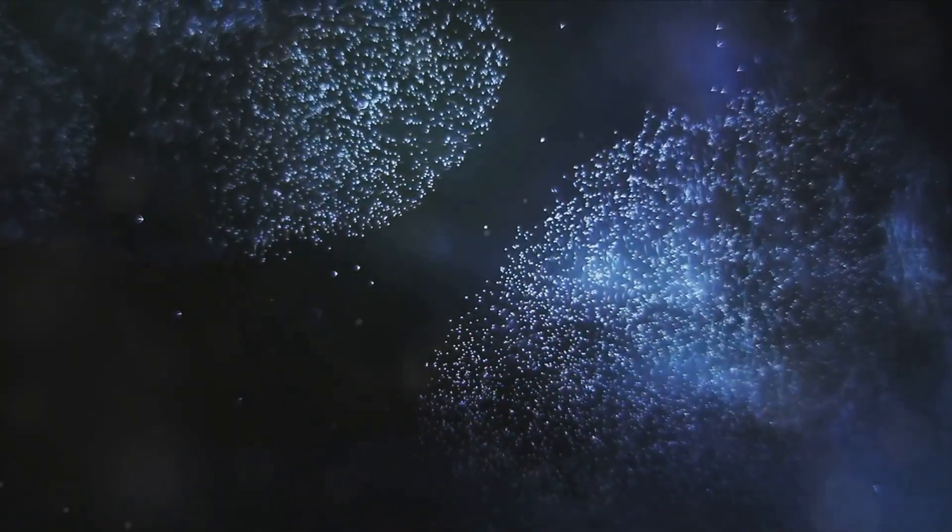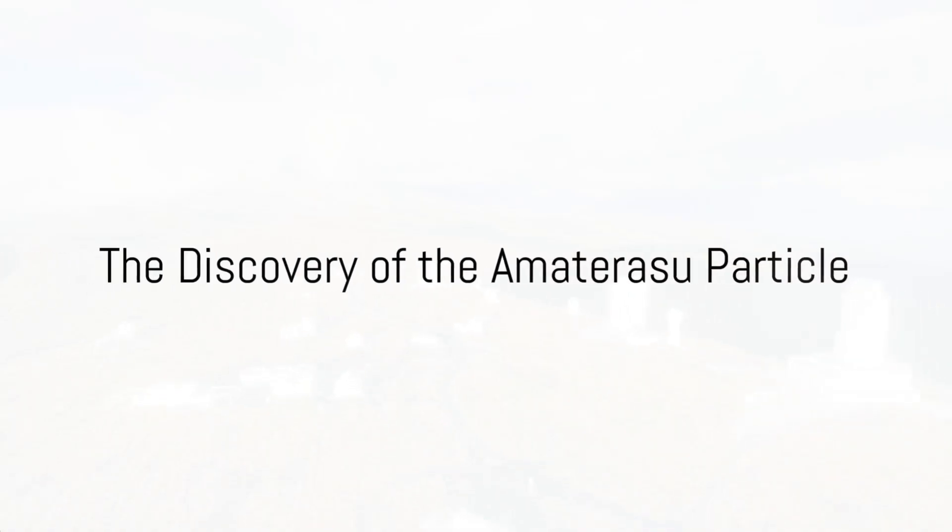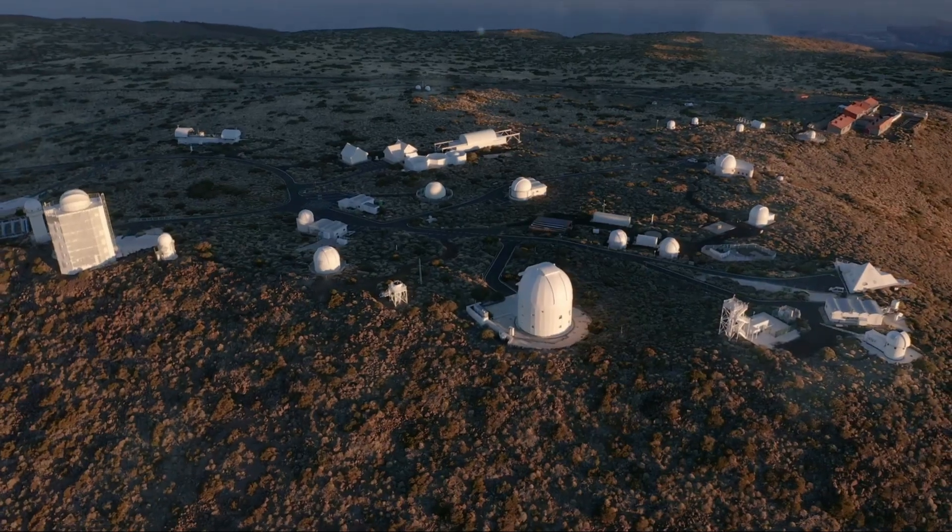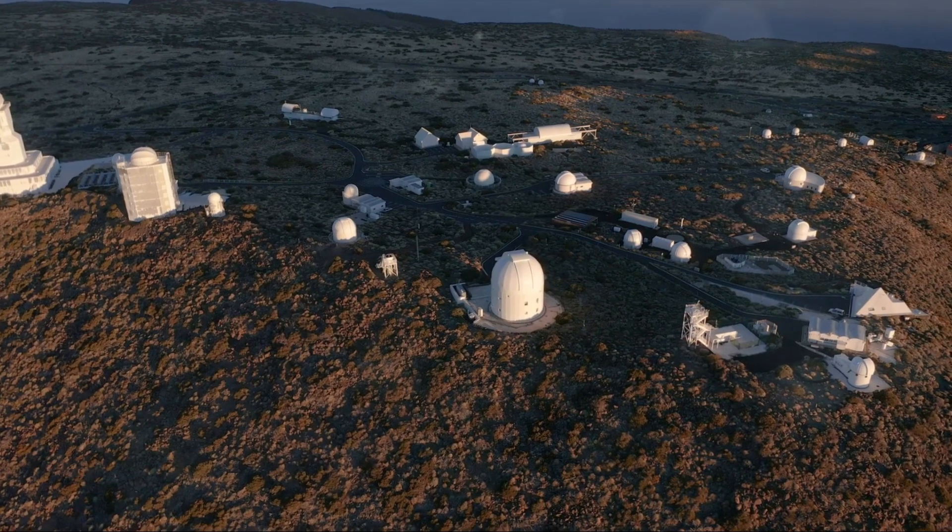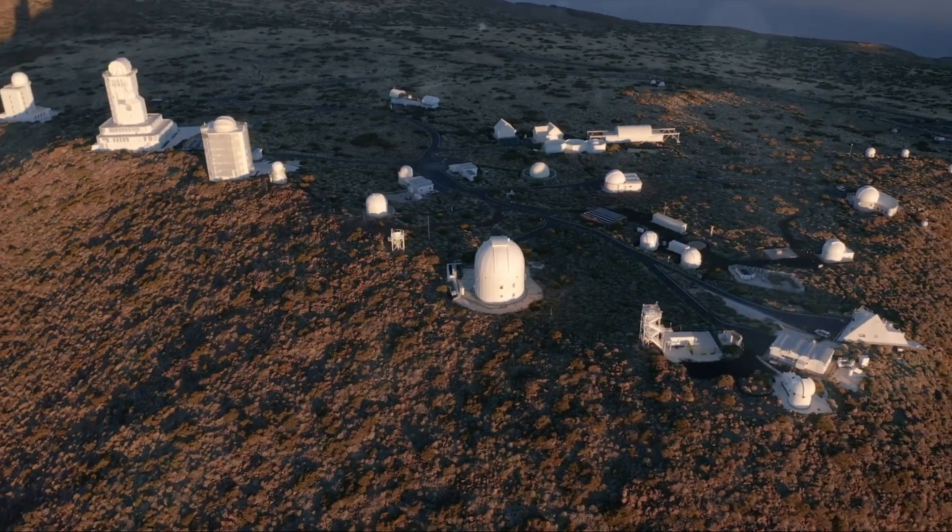The Amaterasu particle was spotted by a cosmic ray observatory in Utah's west desert known as the Telescope Array. This observatory, which started operating in 2008, is made up of over 500 ping-pong table-sized surface detectors covering an area of 700 square kilometers.